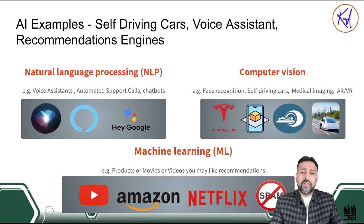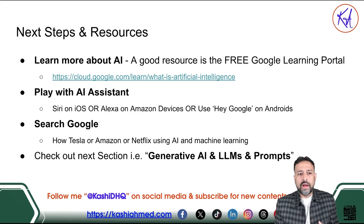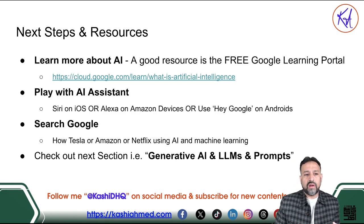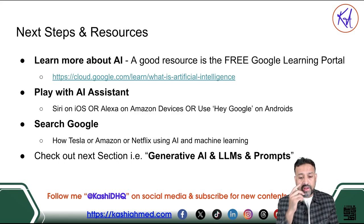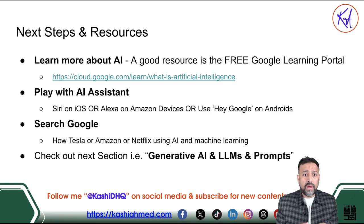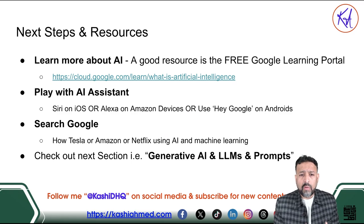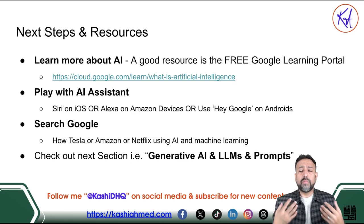Now let's look at next steps. If you want to learn more and go a little deeper in the overview of AI, I would recommend these following resources: Google courses, play with your Siri or Alexa, or search Google and ask how Amazon and Netflix use AI. So this concludes about 20 minutes of high-level concepts — a high-level overview of introduction to artificial intelligence and its core components. I hope you understand and can explain to other people what the core components of AI are and a little bit of its history.